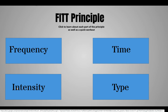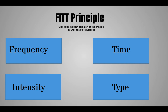So that is the FITT principle: frequency, intensity, time, and type. When thinking about an activity like basketball — can you frequently do it? Yes. Is the intensity high, medium, or low? It can be a little bit of both. Can you play it for a long period of time? Yes. And obviously it is cardiovascular because you'd be running, and you're going to be using muscular strength with shooting and jumping and using your arms and legs. Those exercises go into those different categories.